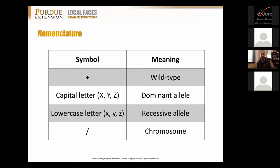Regarding nomenclature when referring to genotype: a plus sign (+) means it's the wild type — what is normally found in nature. A capital letter indicates a dominant allele, and a lowercase letter indicates a recessive allele. A dash or backslash is typically used to indicate which chromosome the allele may be present on.